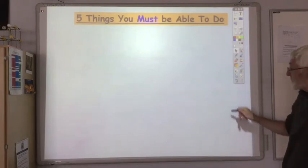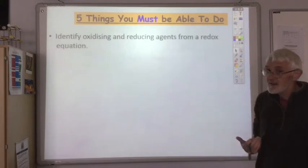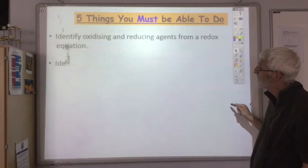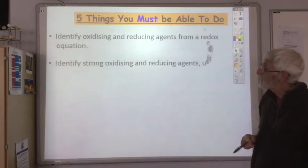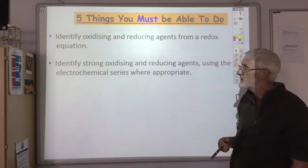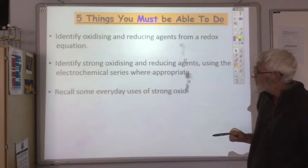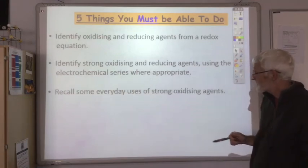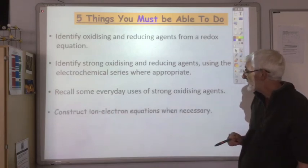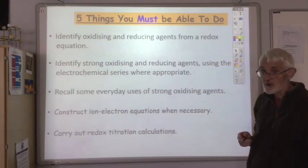In summary, there are five things you should be able to do: identify oxidising and reducing agents from a redox equation; identify strong oxidising and reducing agents using the electrochemical series; recall everyday uses of strong oxidising agents; construct ion-electron equations when necessary; and carry out redox titration calculations.